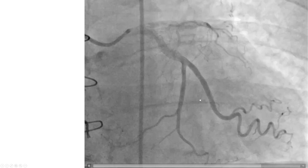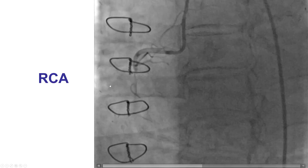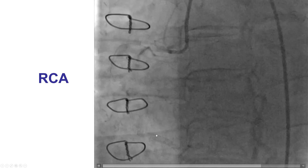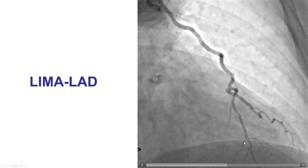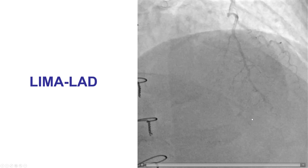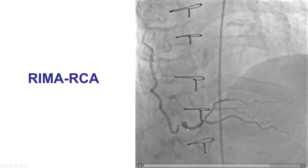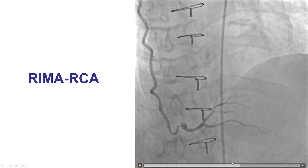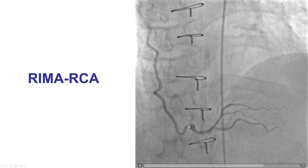Diagnostic angiography showed no significant disease on the circumflex. The LAD was a CTO as known from before. The right coronary artery had a high-grade lesion in the mid-segment, but there was some antegrade penetration of contrast. The LIMA was normal, supplying the left anterior descending artery. The RIMA was also patent; however, there was an area of haziness at the touchdown to the distal right coronary artery, which appeared to be the culprit lesion right at the touchdown of the RIMA graft.